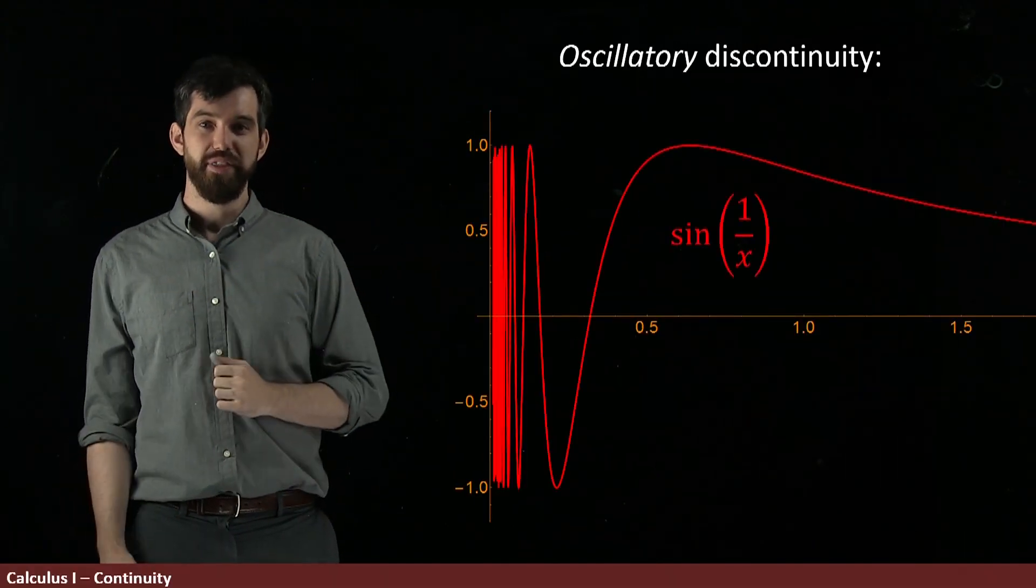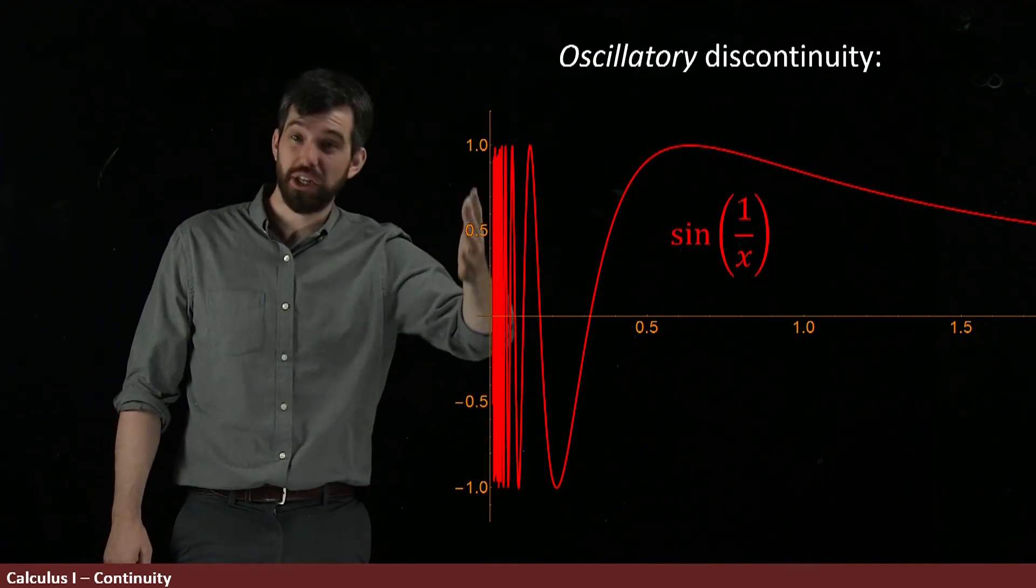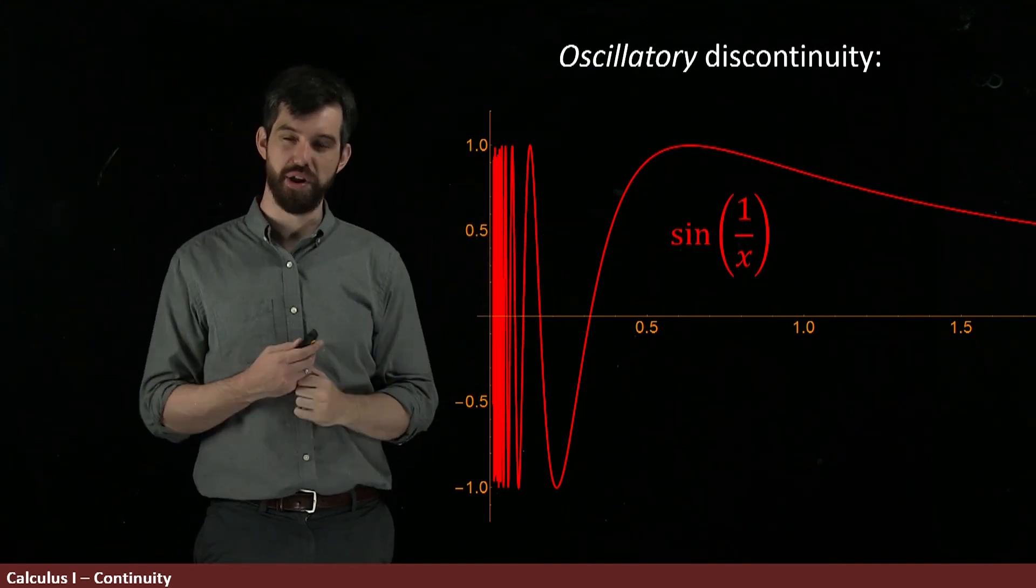Let's look at a different kind. This was the sine of one over x that we've seen a few times and it oscillates a lot. So we're going to call it an oscillatory discontinuity.